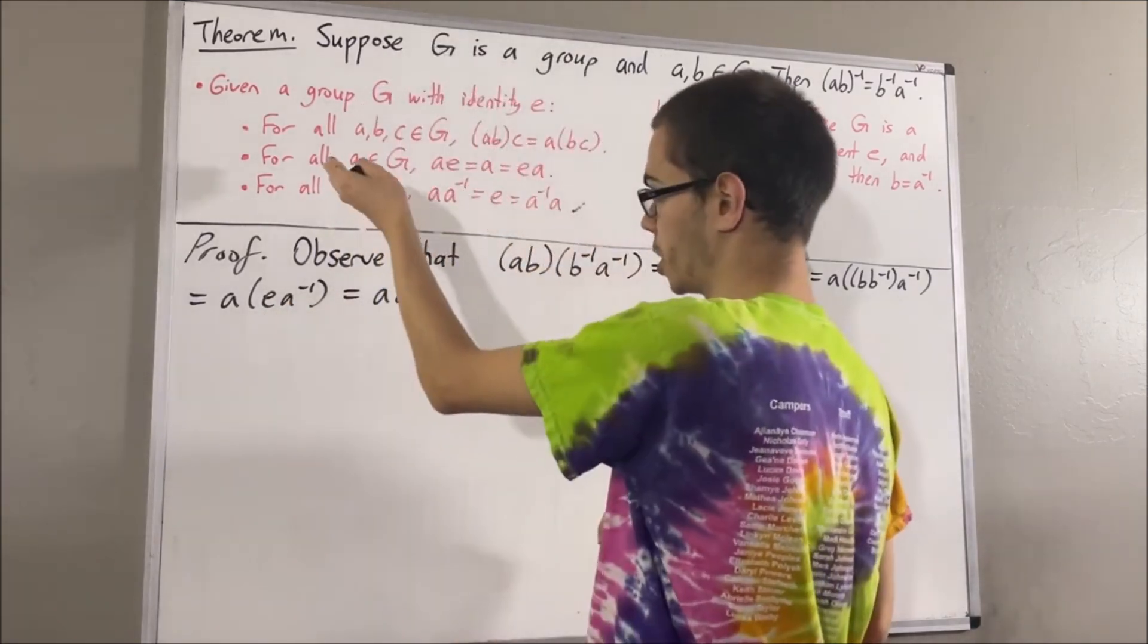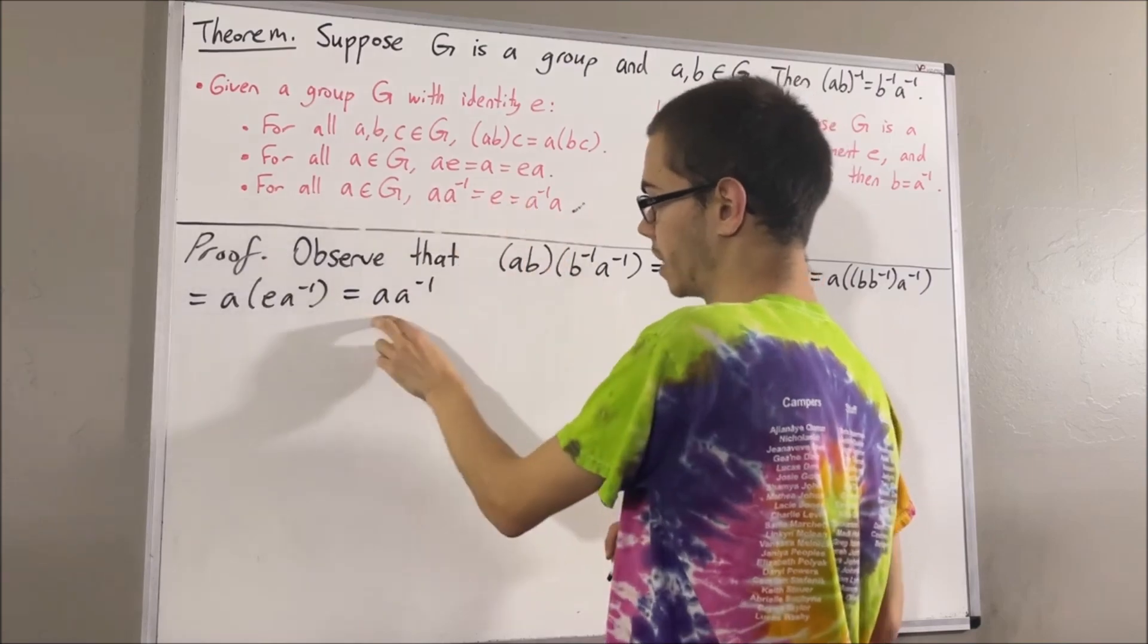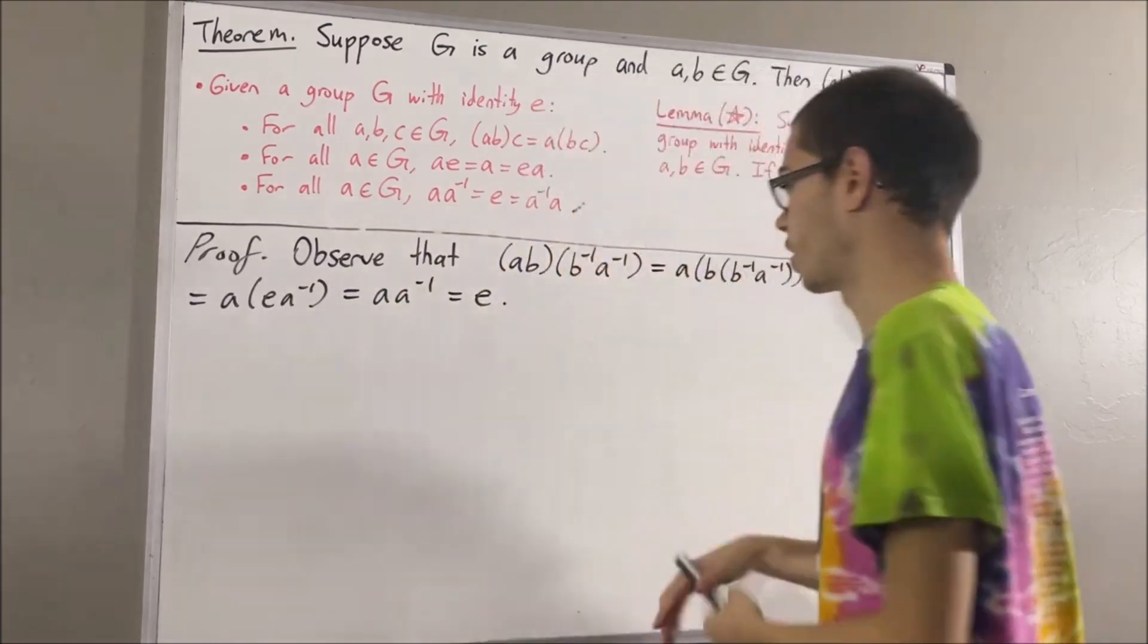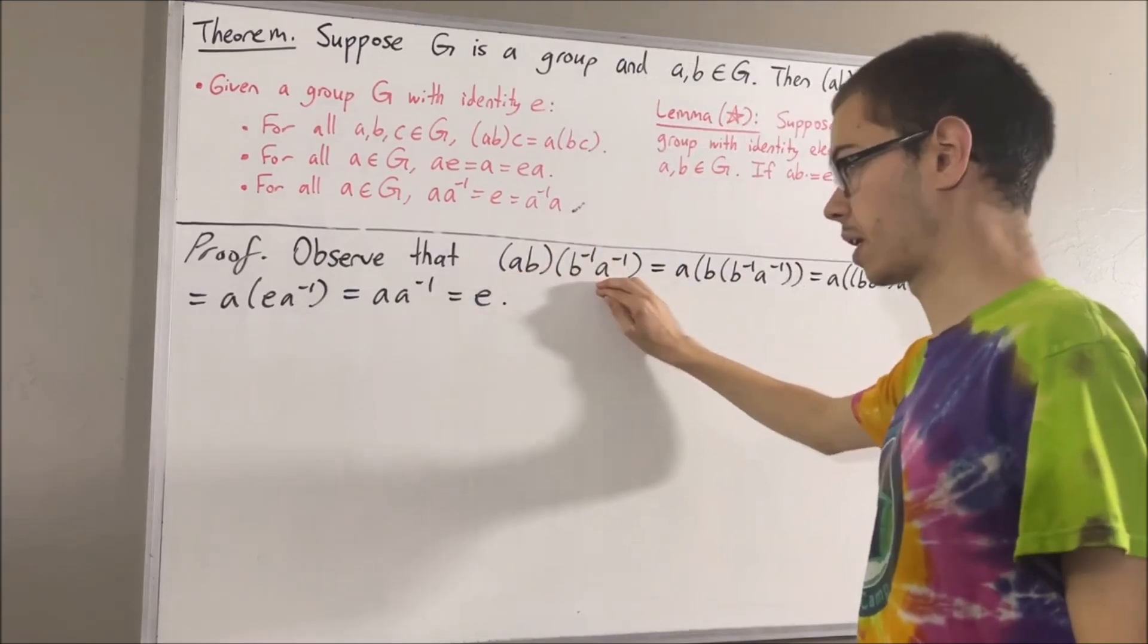But then, we know by definition of the inverse of an element, A times A inverse is equal to E. So, we've shown that if we multiply this guy times this guy, we get E.